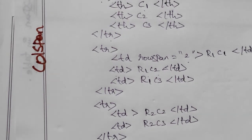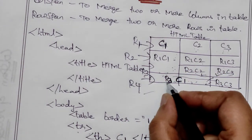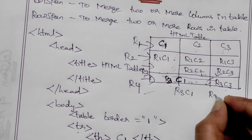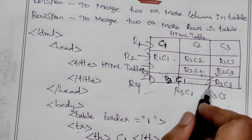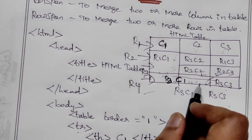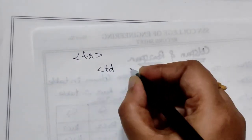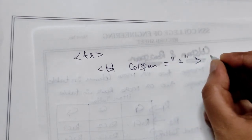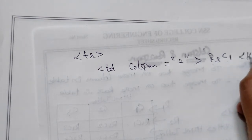Next row — row 4 example — 2 columns merge. Column R3C1, R3C3. Merge 3 columns. Column name R3C1, row 3 column 1. Cell close.